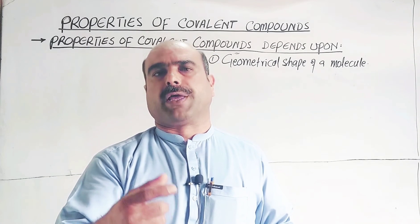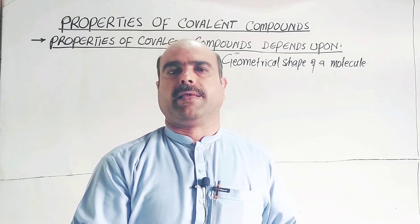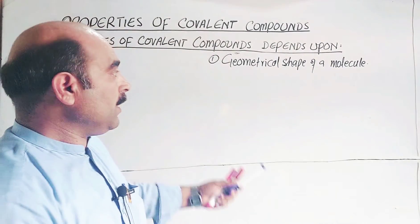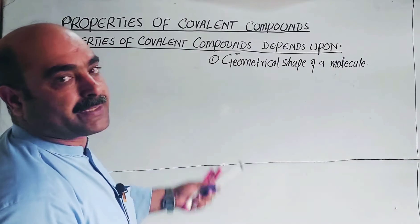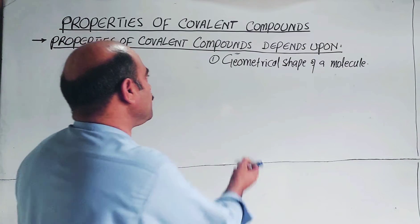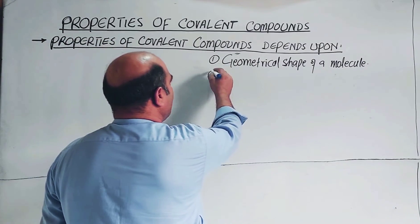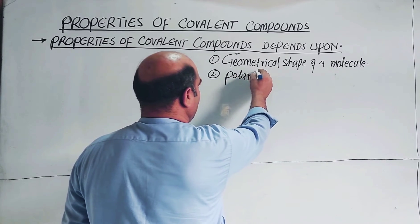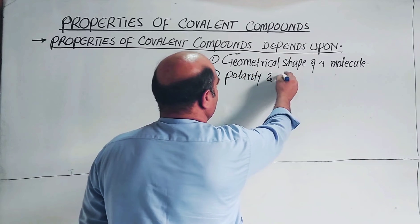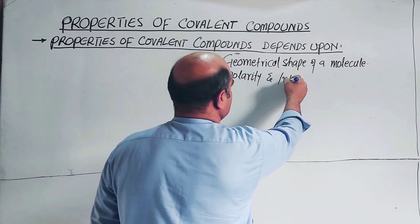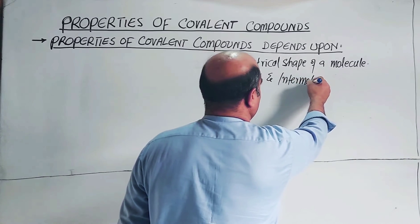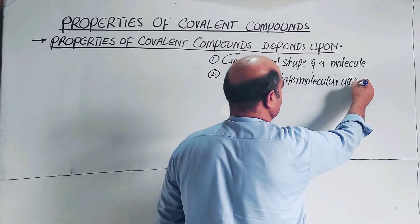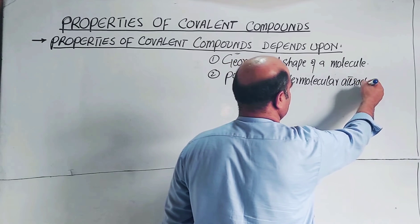Shapes include trigonal bipyramidal, square planar, and others. As the shape of the molecule changes, the properties change accordingly.